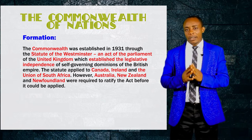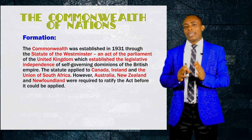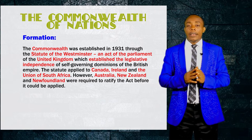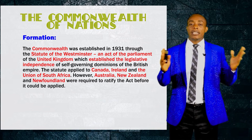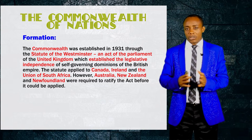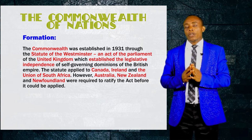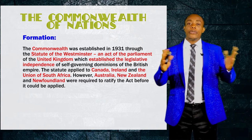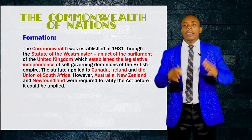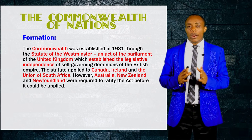The Commonwealth of Nations was officially formed in the year 1931 through the Act of Westminster. This was an act of parliament of the United Kingdom that was passed into law. By this law, the self-governing dominions of the British Empire were granted legislative independence — meaning they were able to make laws for their territory. These self-governing dominions were Canada, South Africa and Ireland. However, some other dominions like Australia, New Zealand and Newfoundland needed to ratify, that is to accept, the act before it could be applied to them. This act of 1931 formally established the Commonwealth of Nations, today known simply as the Commonwealth.